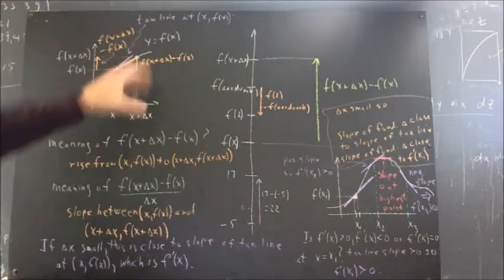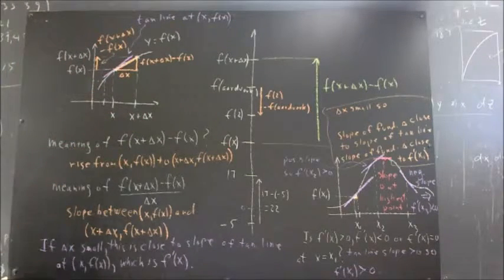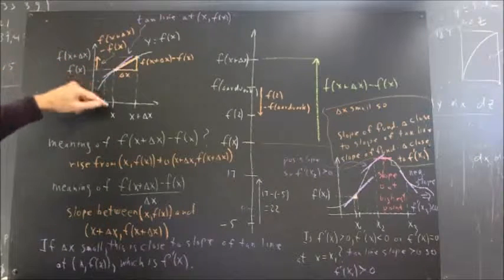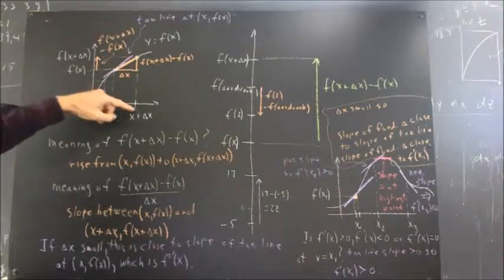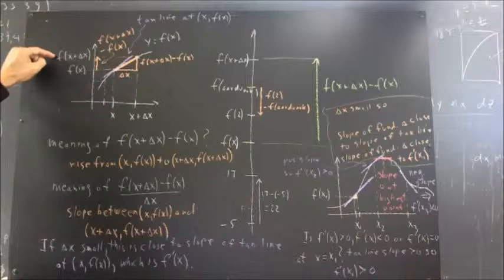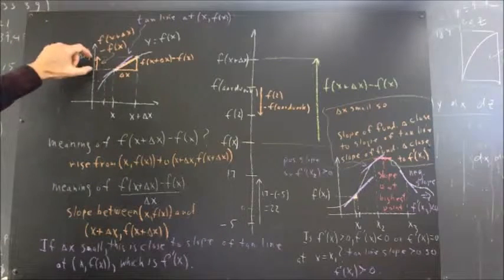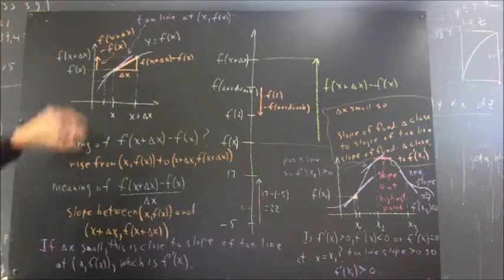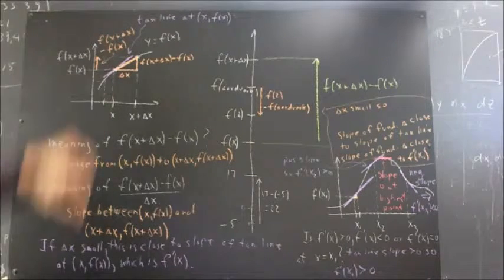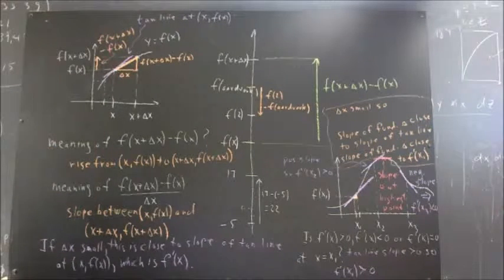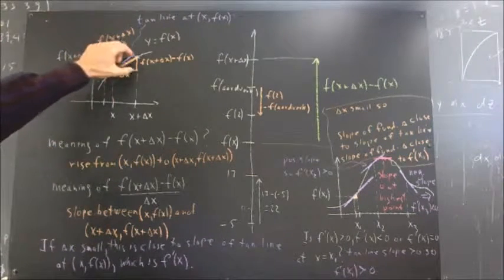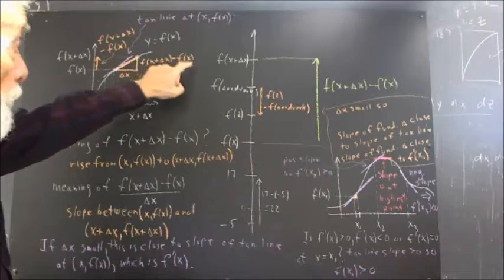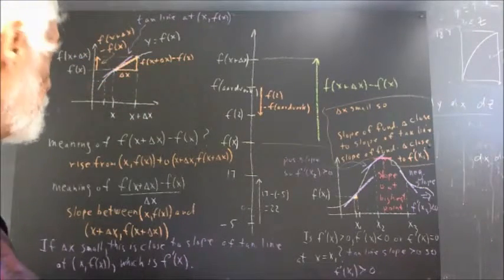On a graph, if we have x and x plus delta x, we find the points f of x up to the graph, find f of x plus delta x — and right there is our f of x plus delta x minus f of x, the arrow representing that difference. That's going to be equal to the rise of this triangle.